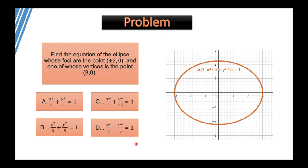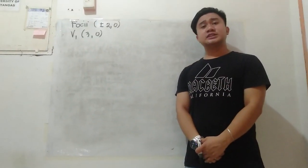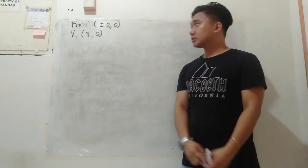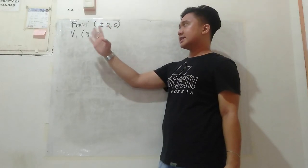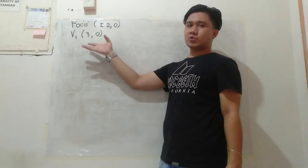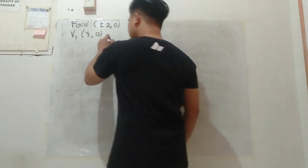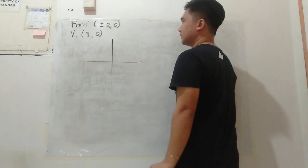Example 2: Find the equation of the ellipse whose foci are the points (±2, 0) and one of whose vertices is the point (3, 0). The problem tells us the foci are at (+2, 0) and (−2, 0), and one vertex is at (3, 0). We need to find the equation of that ellipse.